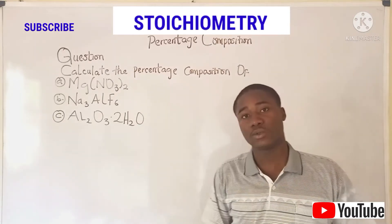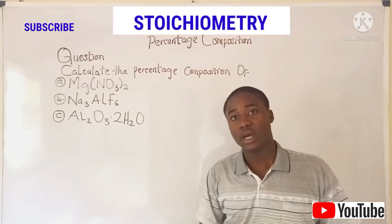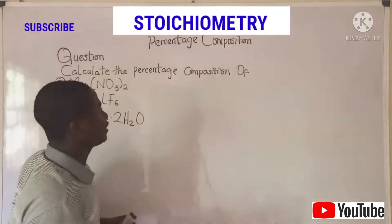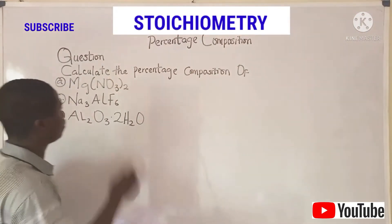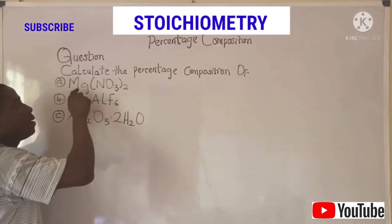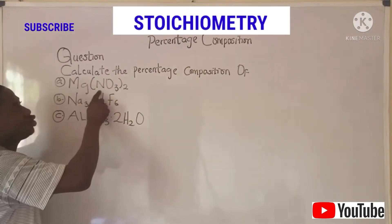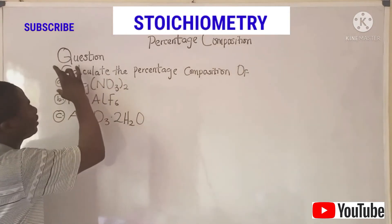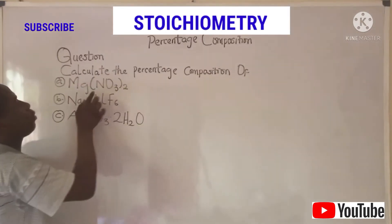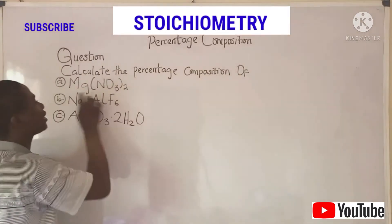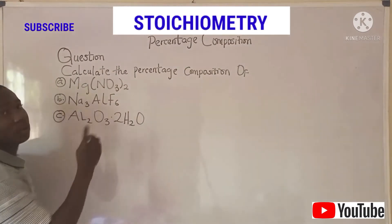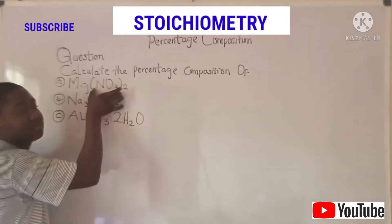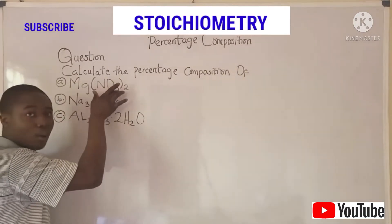You can see these questions written on the board. The question says: calculate the percentage composition of magnesium nitrate. Basically, they are asking us to get the percentage composition of magnesium nitrate — we have to calculate the percentage composition of each element that makes up this compound.